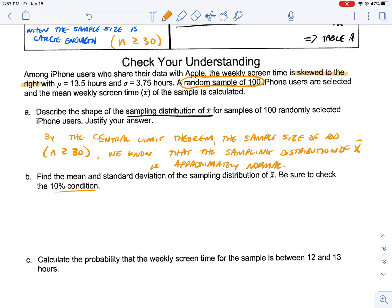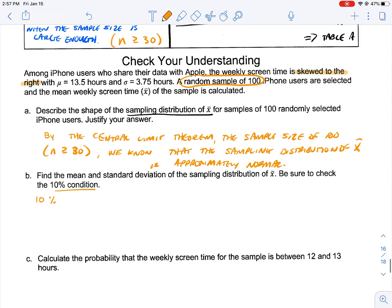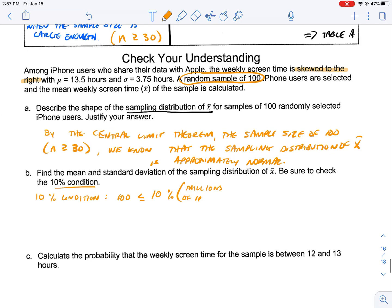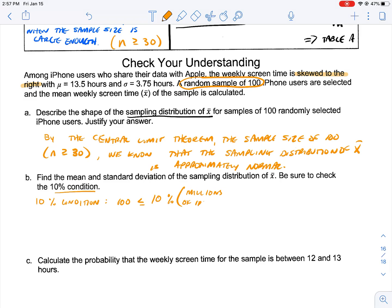Find the mean and standard deviation of the sampling distribution of x-bar. Be sure to check the 10 percent condition. Once again, the 10 percent condition tells us that we want to know is our sample size less than 10 percent of the population. So, 10 percent condition would mean that 100 phones that we pulled is less than 10 percent of the millions of iPhone users.